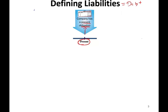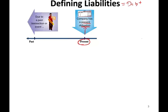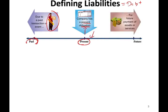Why would you have a present obligation? Why are you obligated to someone? Because something happened in the past. For example, you purchased supplies and you did not pay for them. As a result, you now have a present obligation. This present obligation requires you to make a future payment. So a liability has three components: a present component, because of something that happened in the past, that you have to pay in the future.